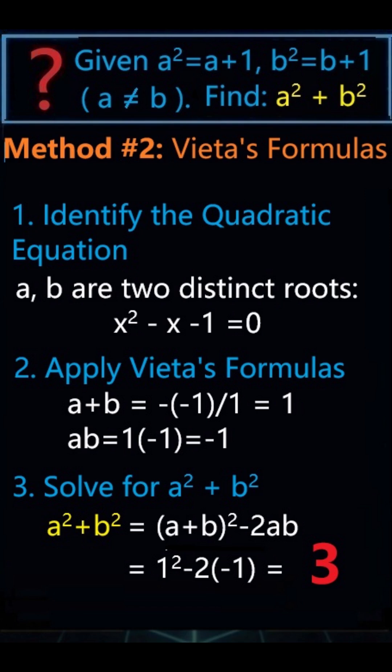Add equations: a square plus b square equals a plus b squared minus 2ab, which equals 3. Same answer. Two paths.